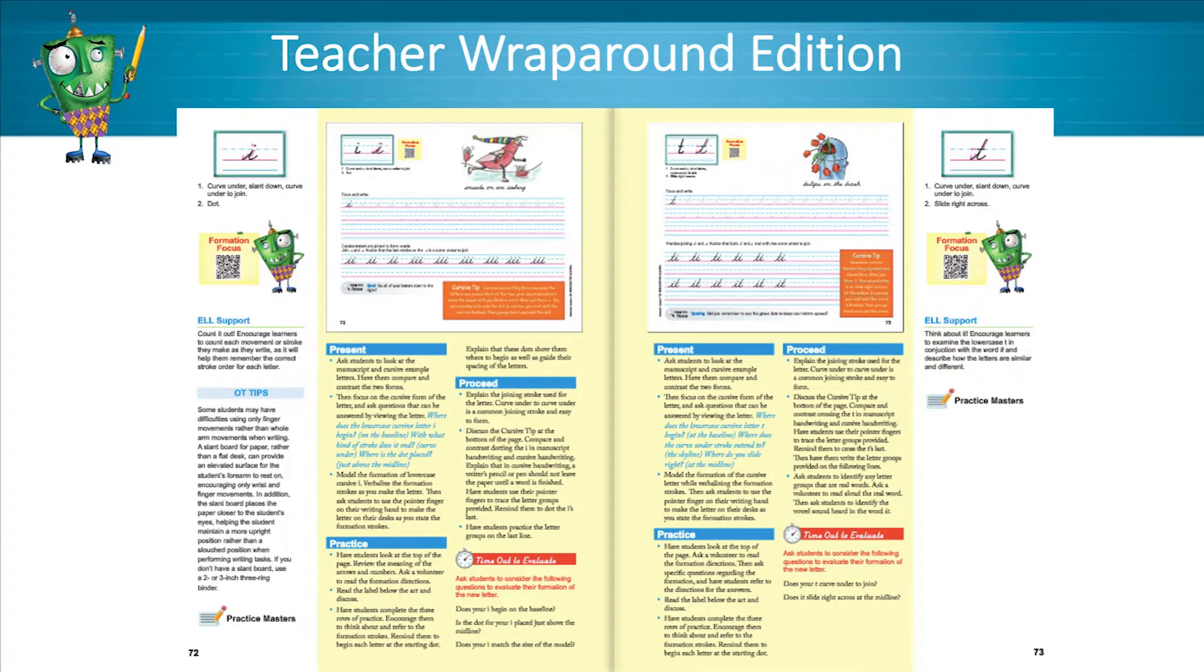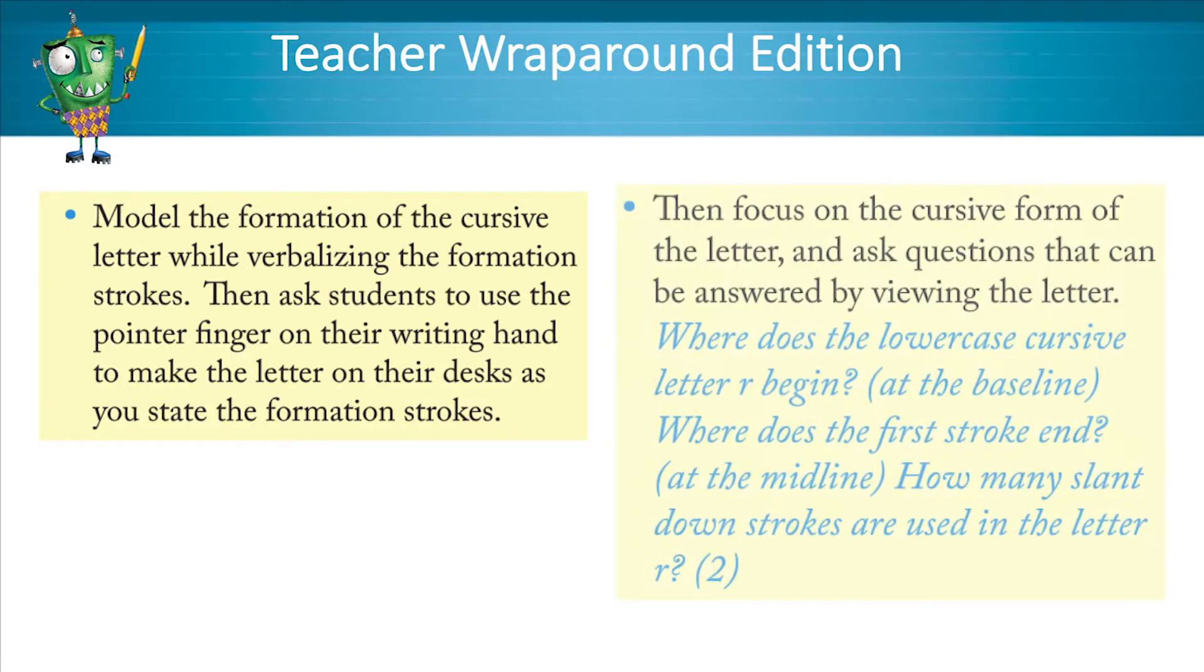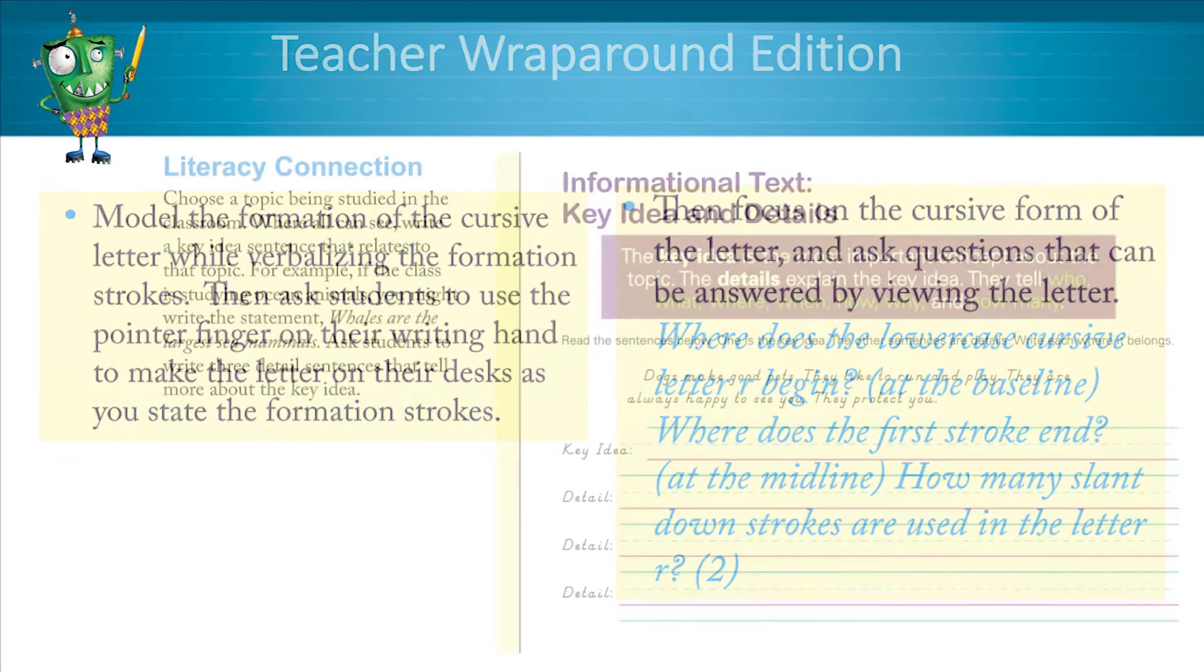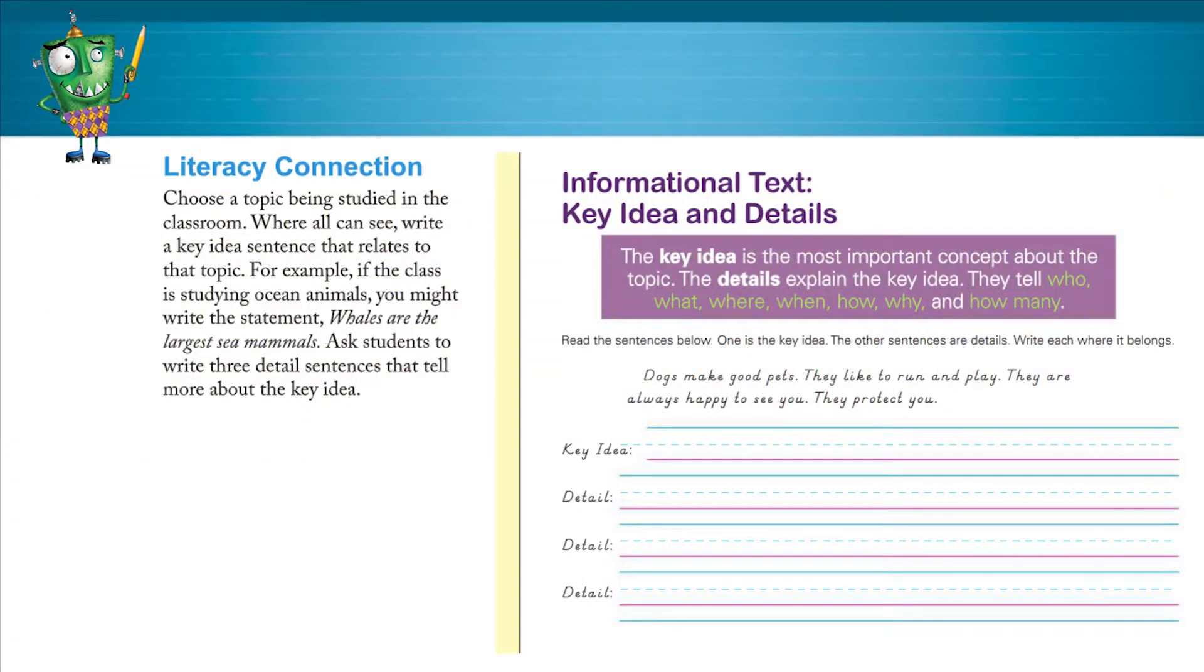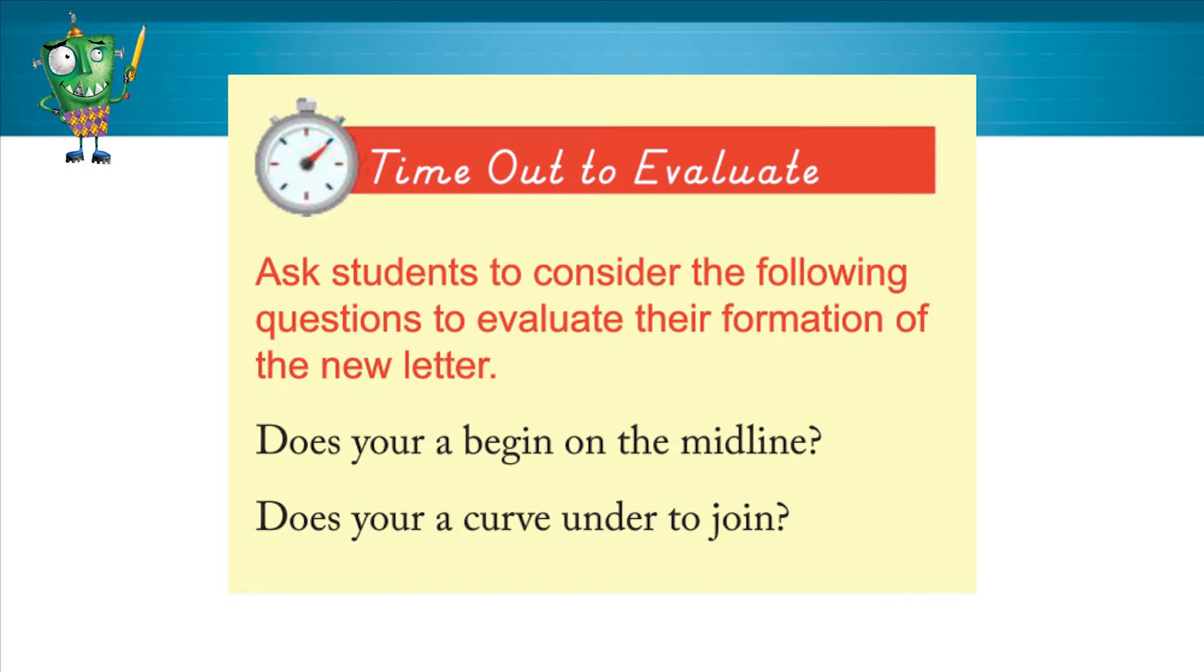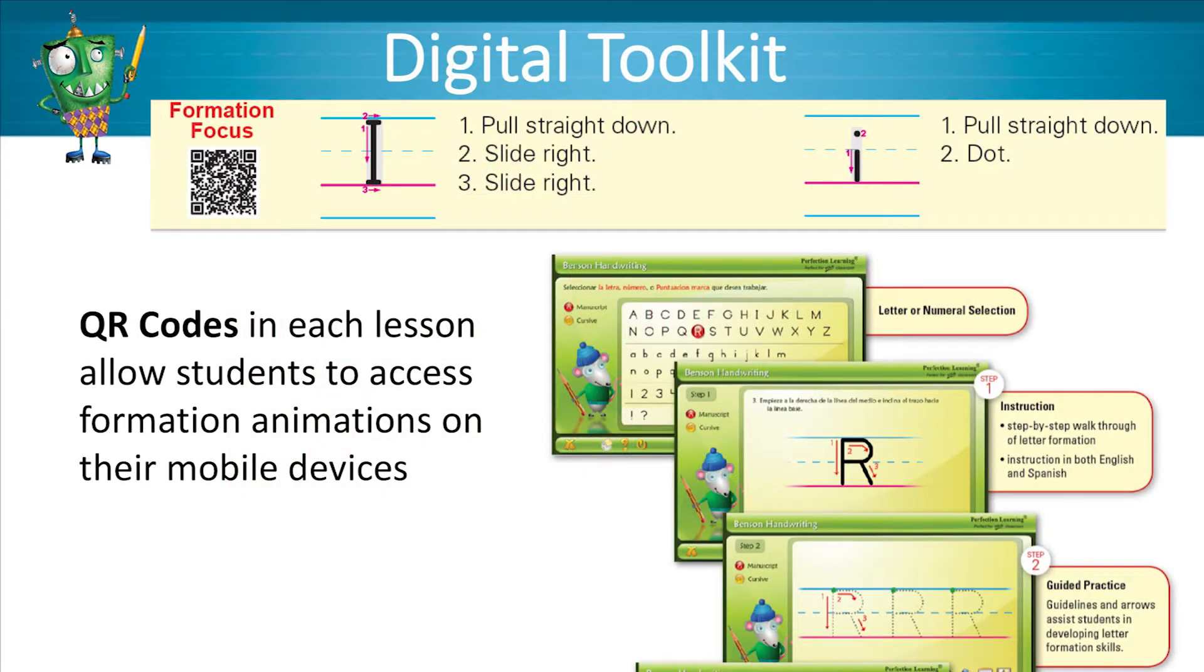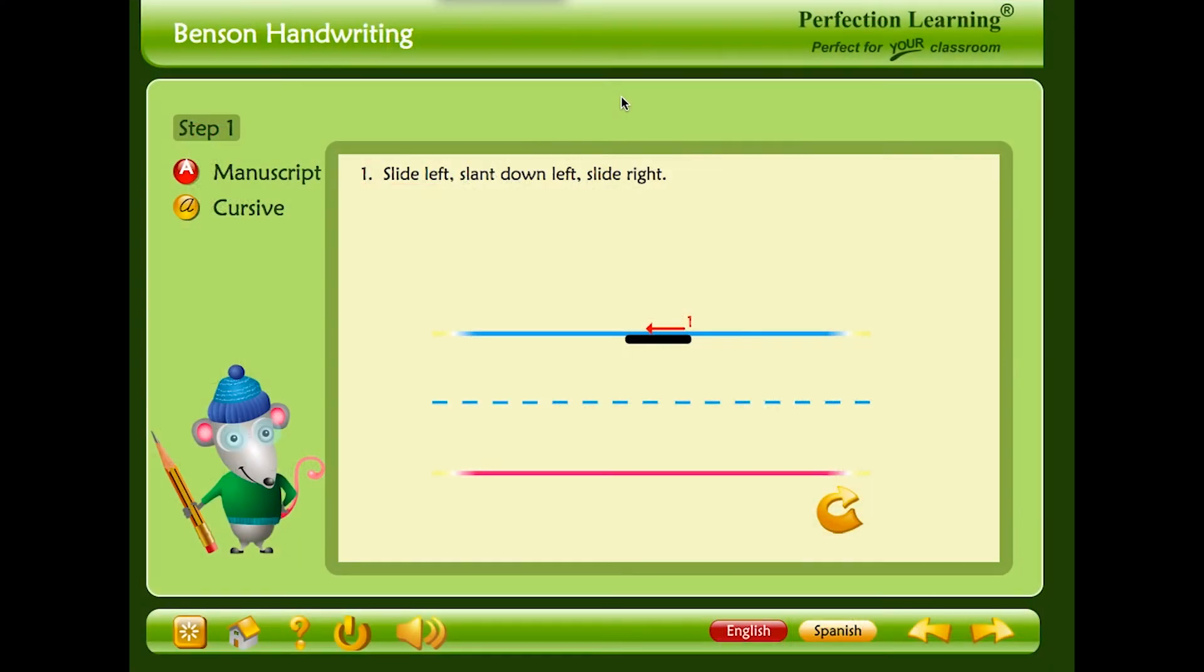The Teacher Wraparound Edition provides opportunities to engage students through questioning strategies, kinesthetic activities, and whole class discussions. The Literacy Connections feature provides support for incorporating ELAR and SLAR skills. The Time Out to Evaluate prompts help students evaluate formation and legibility and select their best work. Finally, the Formation Focus gives direct access to digital letter animations and practice through QR codes.